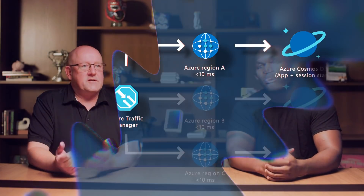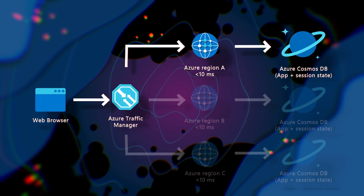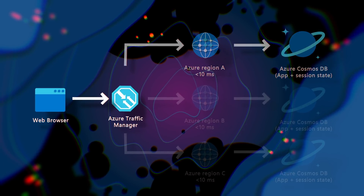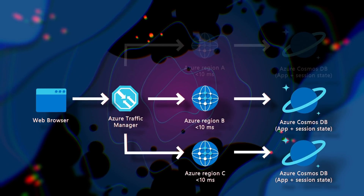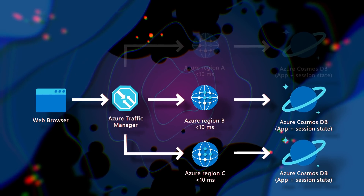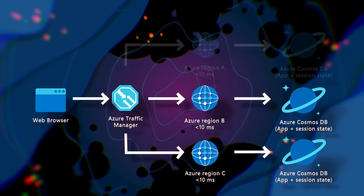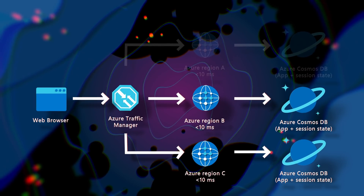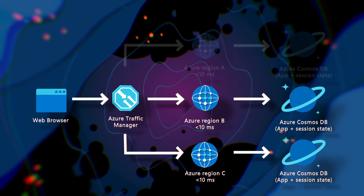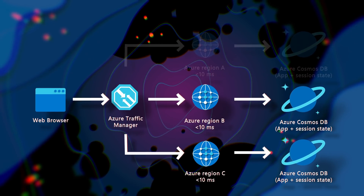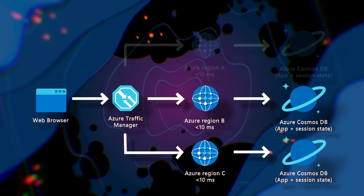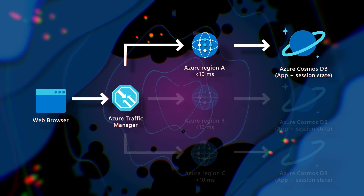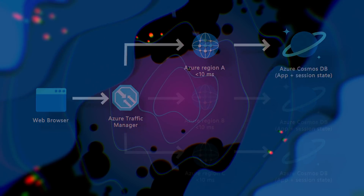So let's say region A goes down. If we are using the performance routing method, when region A becomes unavailable, traffic will be routed to either the B or C regions, depending on which of those is faster. So all requests will go to those two regions, onto then the corresponding Cosmos DB instance in those regions. When region A comes back online, requests will be routed back to it and things will return to normal.